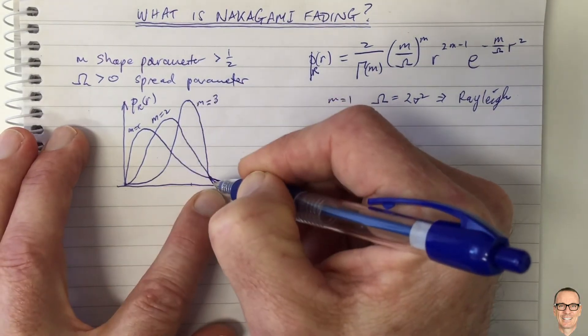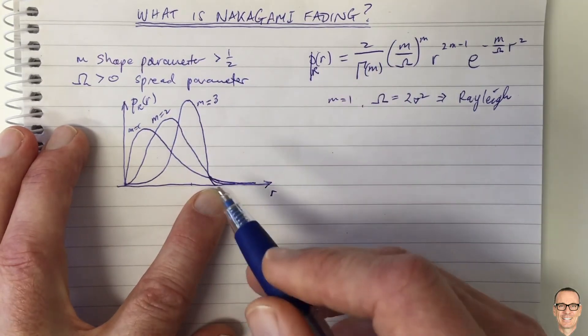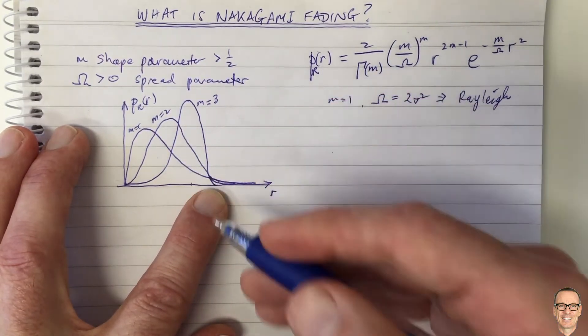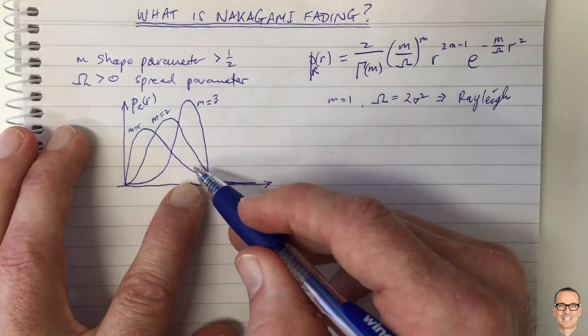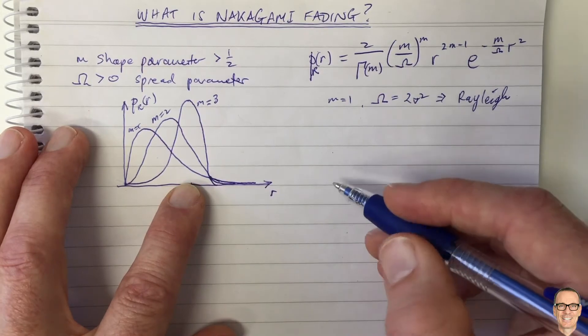But the shape of these curves is different to the Ricean, so sometimes for some scenarios, maybe some buildings or some outdoor scenarios, the Nakagami is going to fit better to the real scenario than the Ricean.